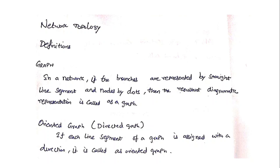First of all, let's start with the graph. What is a graph in a network? If the branches are represented by straight line segments — a circuit or network, both are the same here. In a network, each and every two-terminal element is called a branch. A resistor can be considered as a branch, one voltage source can be considered as a branch, one current source can be considered as a branch.